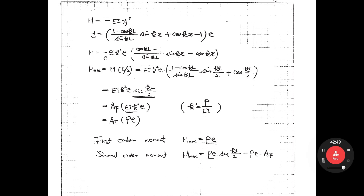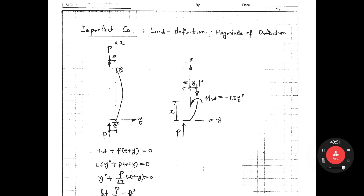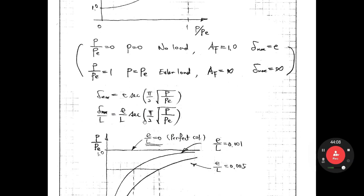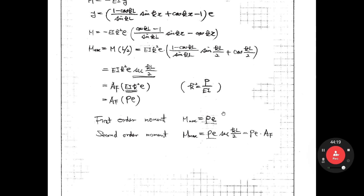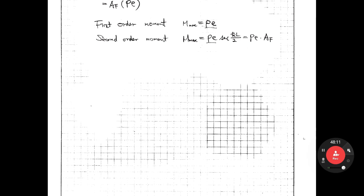We can also obtain the moment: M = −EI y''. Taking the second derivative of y, the maximum moment occurs at mid-height. Substituting x = L/2 and simplifying gives M_max = P · e · sec(kL/2). Here P·e is the first-order moment, and sec(kL/2) is the amplification factor. In first-order analysis, the moment is simply P times e, but in second-order analysis we have this additional amplification. That is the difference between first-order and second-order moment analysis.